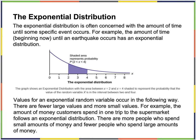The exponential distribution is concerned with the amount of time until a specific event occurs — for example, the amount of time until an earthquake occurs. It's related to the Poisson distribution. It represents mean time between earthquakes, mean time between failures, and is often used in life data analysis. There are fewer large values and more small values — for instance, more customers spend small amounts of money and fewer spend large amounts.